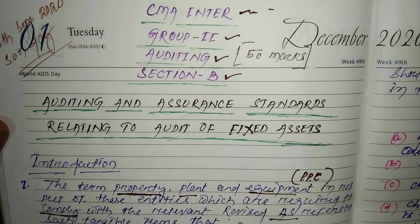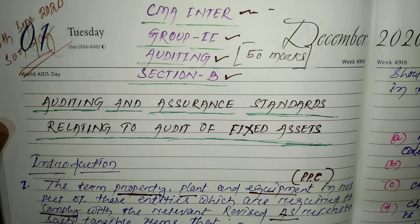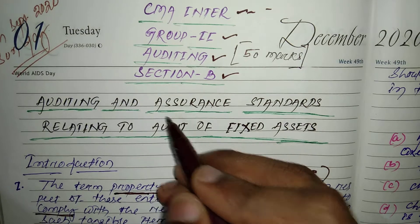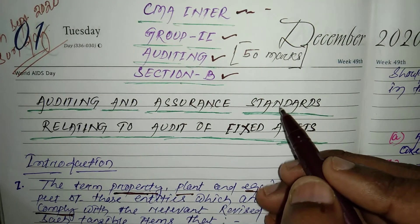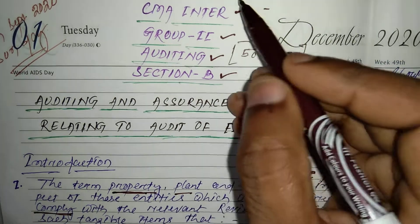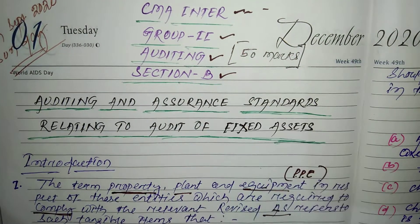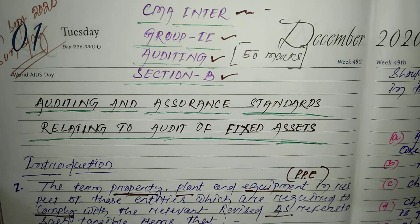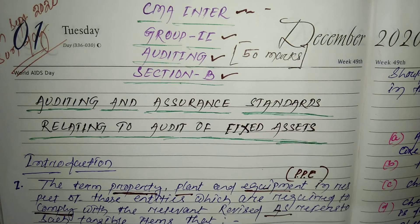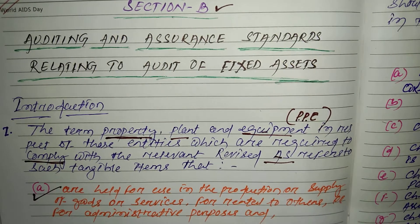Hello and welcome everyone to my YouTube channel. In this video I would like to discuss one of the important topics, that is auditing and assurance standards relating to audit of fixed assets for CMA Inter Group 2 from the auditing section. Auditing section carries 50 marks and this topic is very important from an examination point of view. So without any further delay, let's get started.